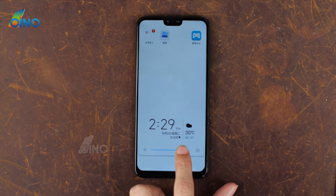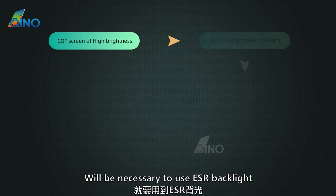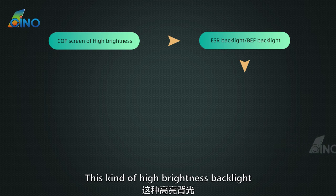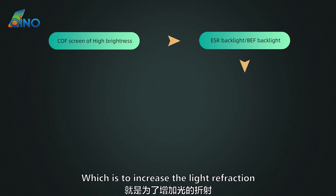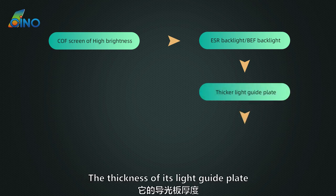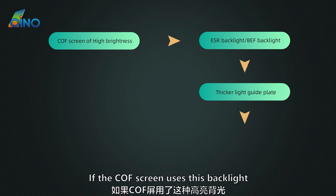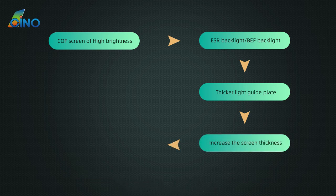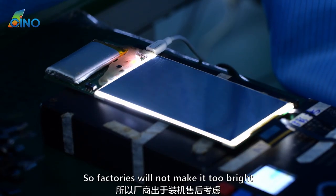Some people may ask: why is the brightness effect of the COF screens I use not good? Simply put, factories won't make COF screens too bright. Screens of high brightness require ESR backlight or BEF backlight, which has a remarkable feature of increasing light refraction. The thickness of its light guide plate is obviously thicker than that of ordinary brightness backlight. If the COF screen uses this backlight, it leads to a relative increase in thickness.